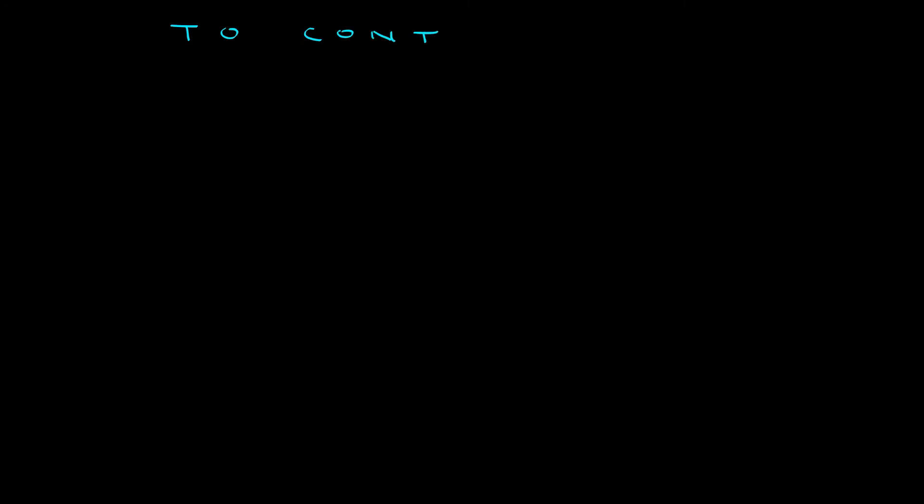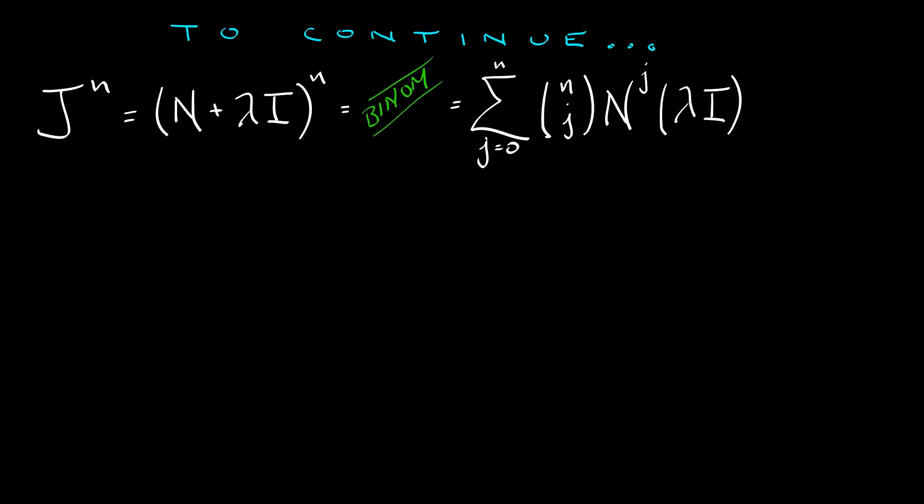Oh, and here's why this is so cool. If I take J to the nth power, that is, I take quantity N plus lambda I to the nth power, then applying the binomial theorem to this power, I can express this as the sum j goes from zero to n of n choose j times capital N to the j times lambda I to the n minus j. Let's go term by term and see what we get. When j equals zero, then I get n choose zero, which is just one times N to the zero, which is the identity times lambda I to the n. That's just lambda to the n times the identity. That's going to give us our diagonal.